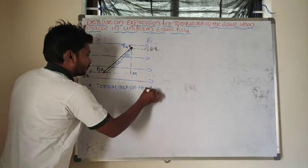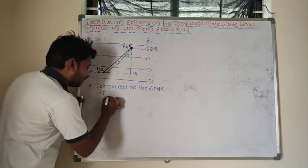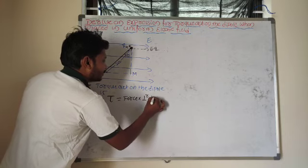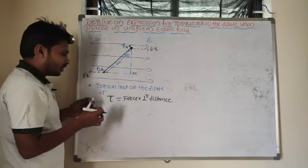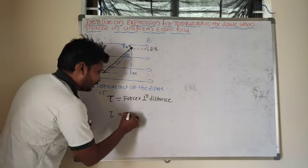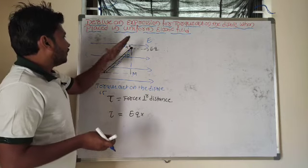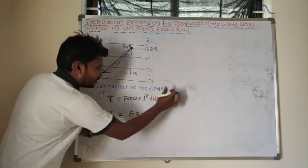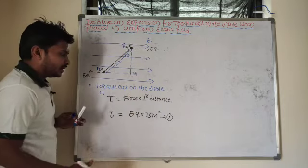Torque acting on the dipole: what is the generalized formula for torque? Torque τ = force × perpendicular distance. The expression for force is F = EQ. So the equation becomes: force F = EQ × perpendicular distance. For this dipole, what is the perpendicular distance? BM acts as the perpendicular distance here. So τ = EQ × BM.